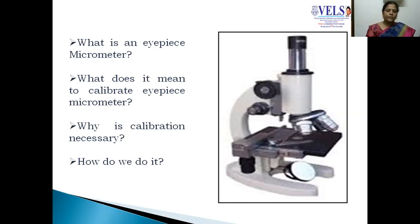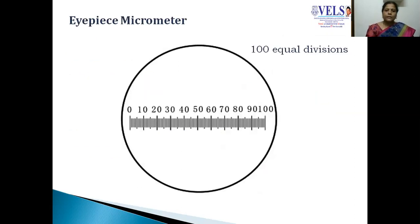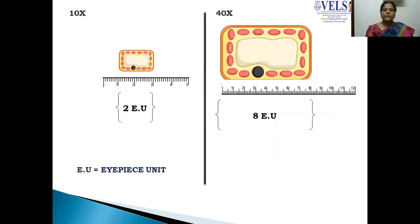First, the IPS micrometer, when it is focused in low power, will look like this. It shows a division set number — 100 divisions. Now, if I focus on an unidentified object at low power and measure the length, it shows, for example, two IPS units.